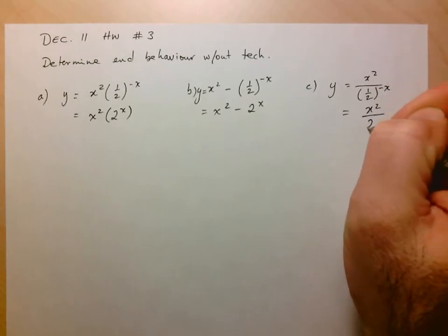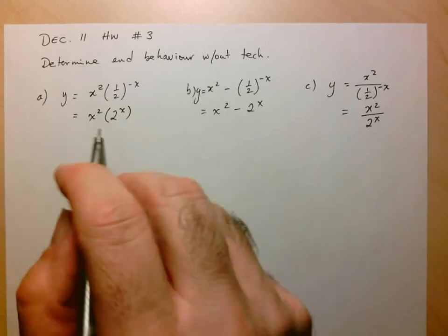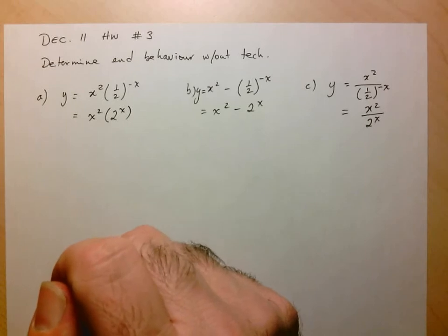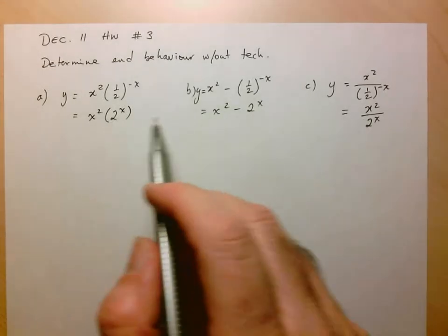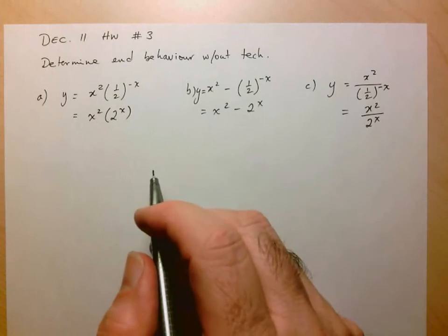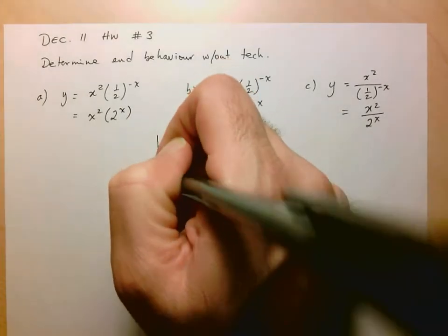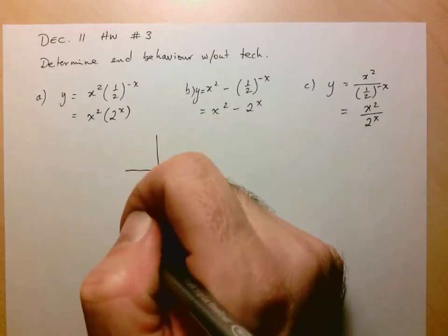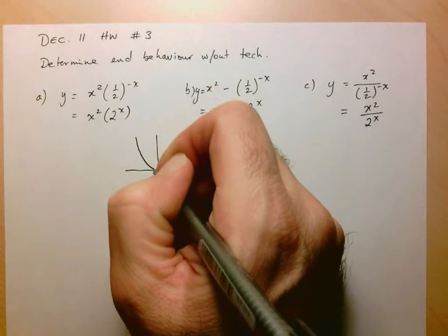So we have x squared times 2 to the x, x squared minus 2 to the x, and x squared over 2 to the x. Let's take a look at these three. To help me out, let me draw both of these functions on a graph, because there are no hard and fast rules for solving these types of problems — you have to analyze the end behaviors of the two functions and make a conclusion based on what you know.